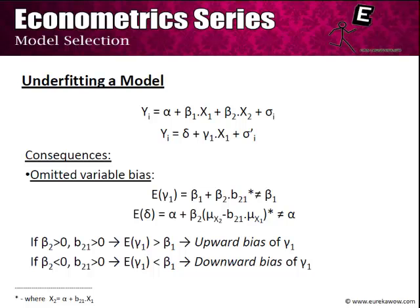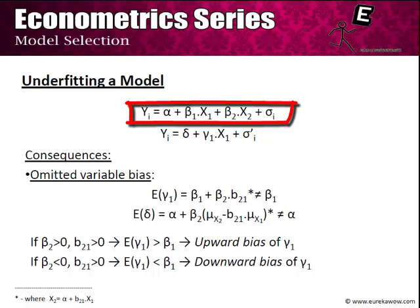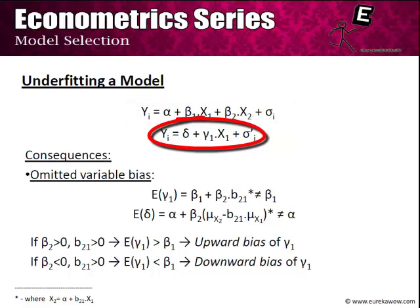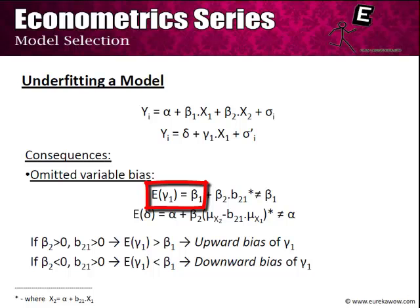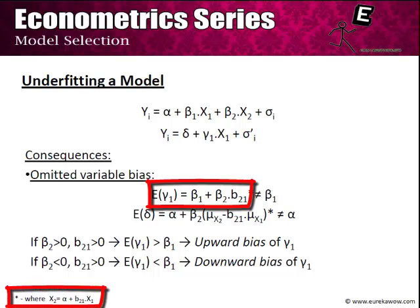We commit a problem of underfitting if, suppose the original population model was yi = alpha + beta1*x1 + beta2*x2 + sigma_i, but we omit the variable x2 and the model we actually run is yi = delta + gamma1*x1 + sigma_i'. Note that this is the only case of violation of the Gauss-Markov assumptions that produces a bias in the OLS estimate. When we run the model yi = delta + gamma1*x1 + sigma_i', the expected value of gamma1, which should be equal to beta1, will actually equal beta1 + beta2*b21, where b21 is the slope coefficient of a regression which plots x2 as a function of x1.